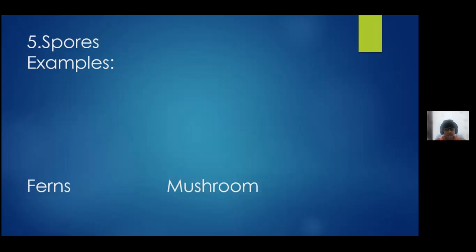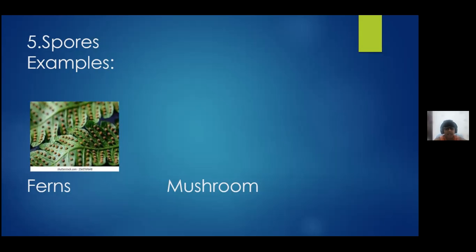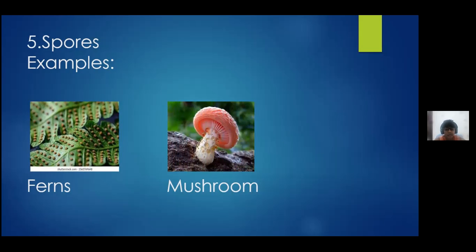The fifth one is spores. Spores are things that are on leaves — some of you might not know what spores are. Spores are very small microorganisms that lie on some plant leaves. They fly through the air and plant wherever they land. The examples are ferns and mushrooms.